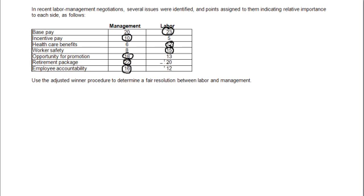So the next thing I want to do is figure out are the points equal? Because if the points are equal, then we would have a fair resolution. So let's add these up, management and labor. So management has the 10, 18, 22, and 16. Adding these together, we would get 66.